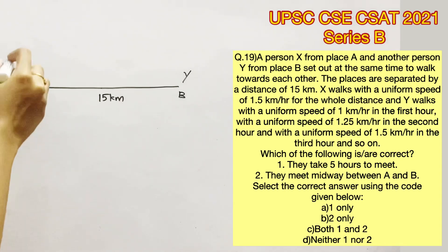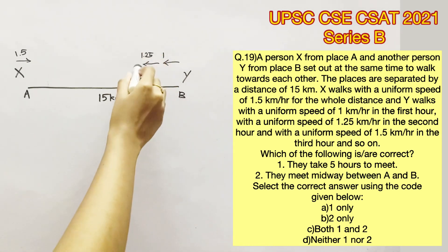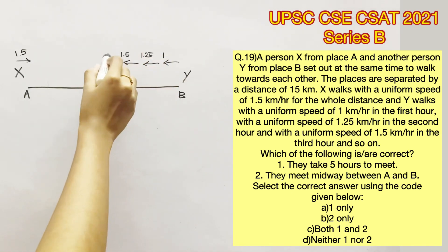X walks with a uniform speed of 1.5 kilometers per hour for the whole distance, and Y walks with a uniform speed of 1 kilometer per hour in the first hour and 1.25 kilometers per hour in the second hour, 1.5 in the third hour, so next will be 1.75 and next will be 2 kilometers per hour.